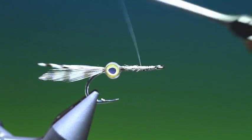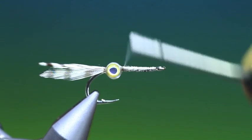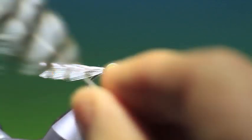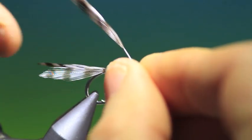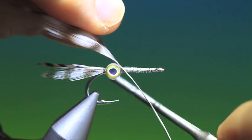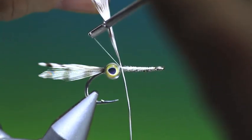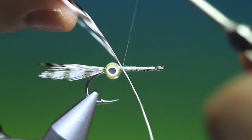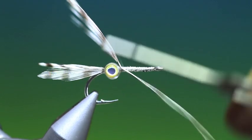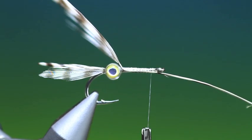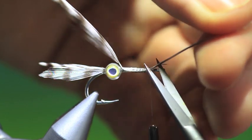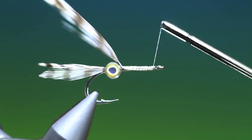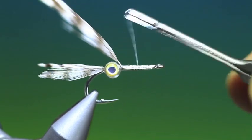That'll do us there. And what we want to do is go back again with our tying thread. And then we need a nice long grizzle hackle, webby one. And we'll tie this in right behind the eye. And then just secure it along the hook shank. Trim it off.